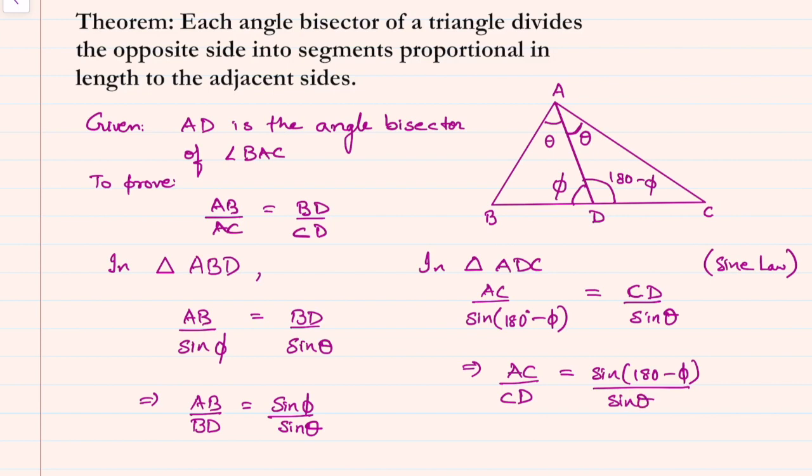So from equation 1 and equation 2, from 1 and 2, we learn we can say AB by BD is equal to AC by CD.